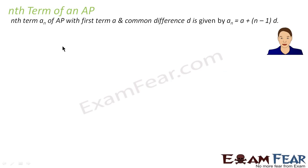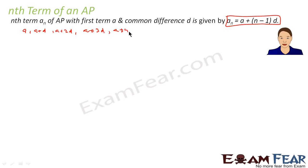For a given AP, if you have to find the nth term, denoted by a_n, it is nothing but a + (n-1)d. The AP I have shown you is: a, a+d, a+2d, a+3d, a+4d, and so on. This term is called a1, this is a2, this is a3 — that is the third term — this is the fourth term, this is the fifth term, and so on.